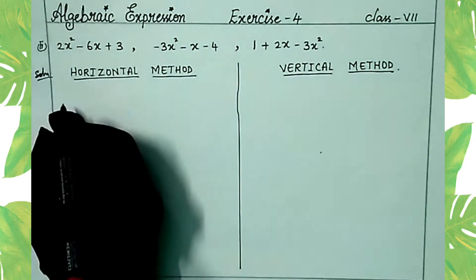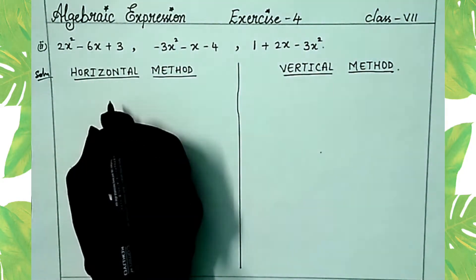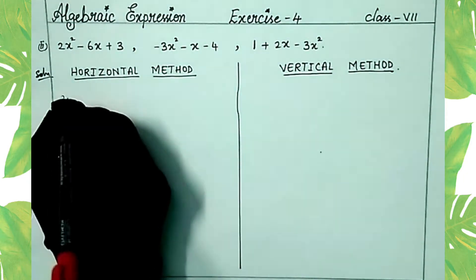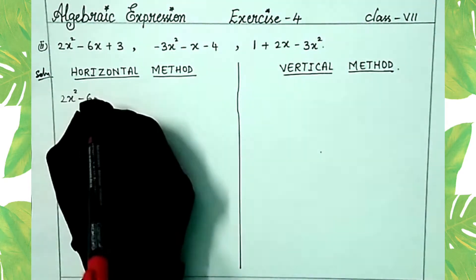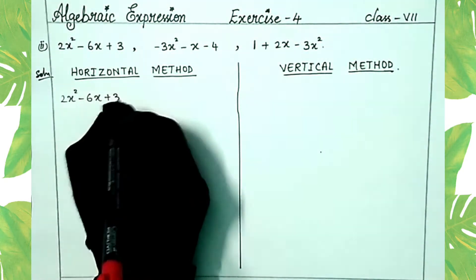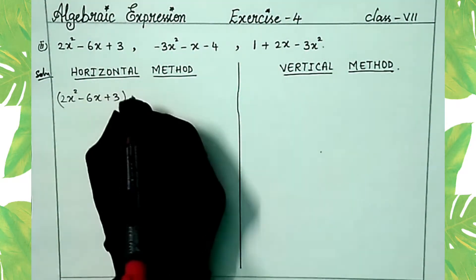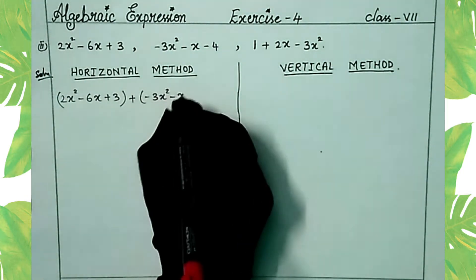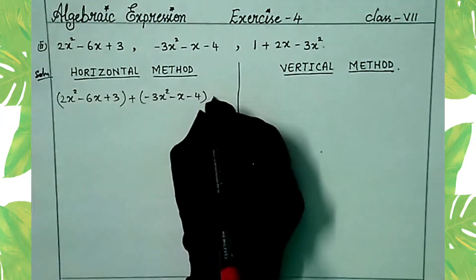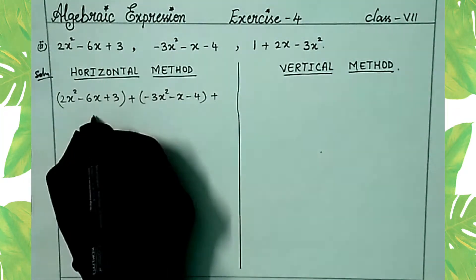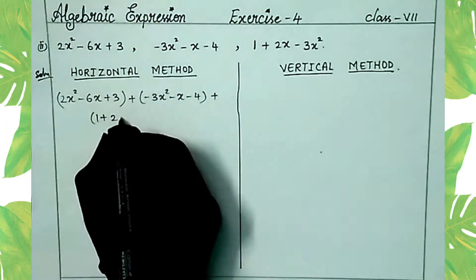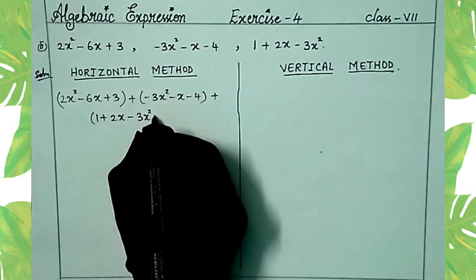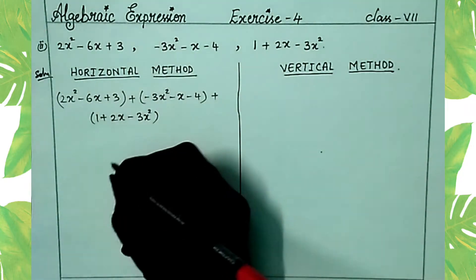Let's do this. First of all, write these expressions with the addition symbol in between: 2x² minus 6x plus 3, plus, minus 3x² minus x minus 4, plus, 1 plus 2x minus 3x².